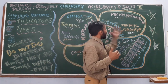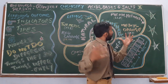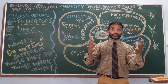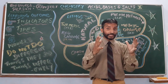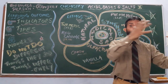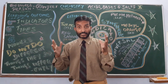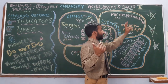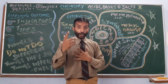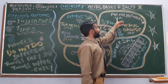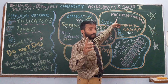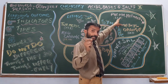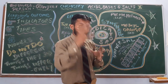Next is our synthetic indicator. Synthetic indicators are those which are man-made — they are made in the laboratory with the help of some chemicals. We are having two: phenolphthalein and methyl orange. Phenolphthalein is colourless originally — in acid it is colourless, but pink in the base.